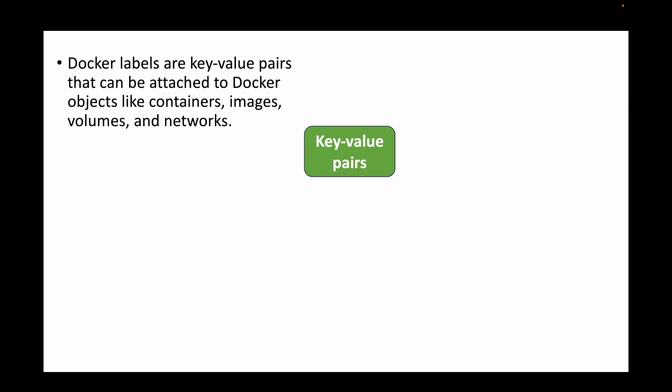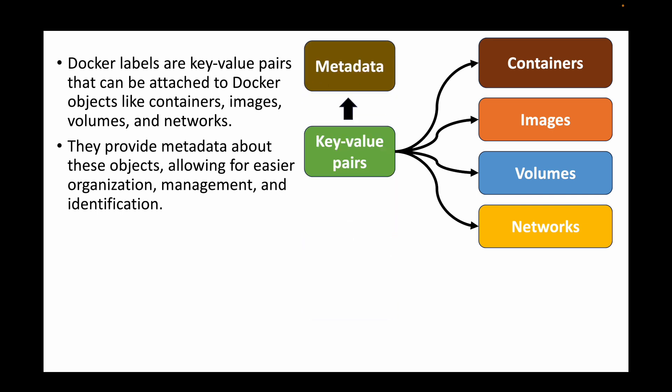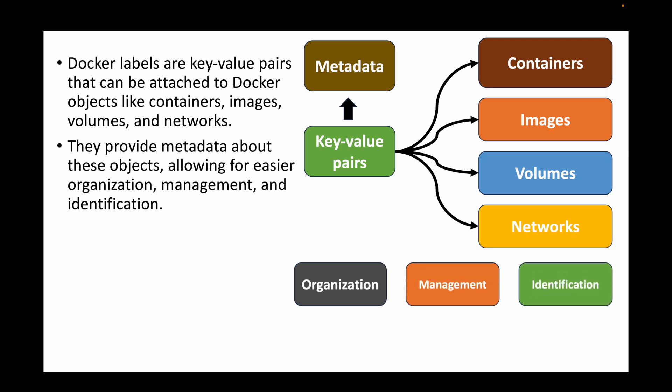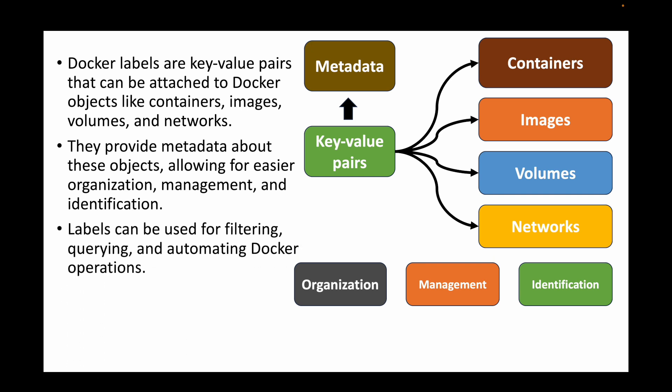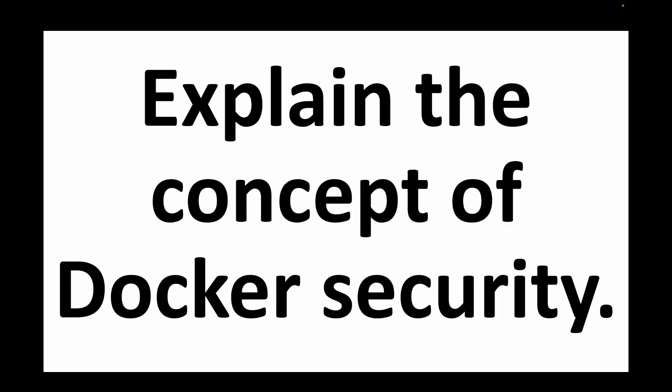The next question is: what are Docker labels and how are they used? Docker labels are simply key-value pairs that can be attached to Docker objects such as containers, images, volumes, and networks. They act as metadata — any additional information you want to provide about your Docker objects can be passed as key-value pairs. This allows for easier organization, management, and identification of Docker objects, and helps in filtering, querying, and automating Docker operations. For example, if you have 100 containers and want to filter them, you can use labels.